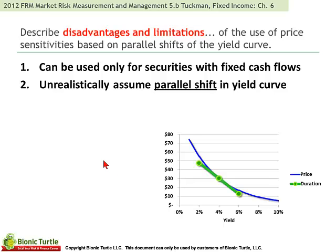Disadvantages: it can be used only for securities with fixed cash flows. As a single-factor model, it necessarily assumes a parallel shift in the yield curve — we're trying to convey the behavior of an entire term structure in a single factor, so we necessarily assume a parallel shift. As a linear approximation, we only expect it to be accurate for really small yield shocks. The larger the yield shock, the more that convexity is going to betray the accuracy of our duration.